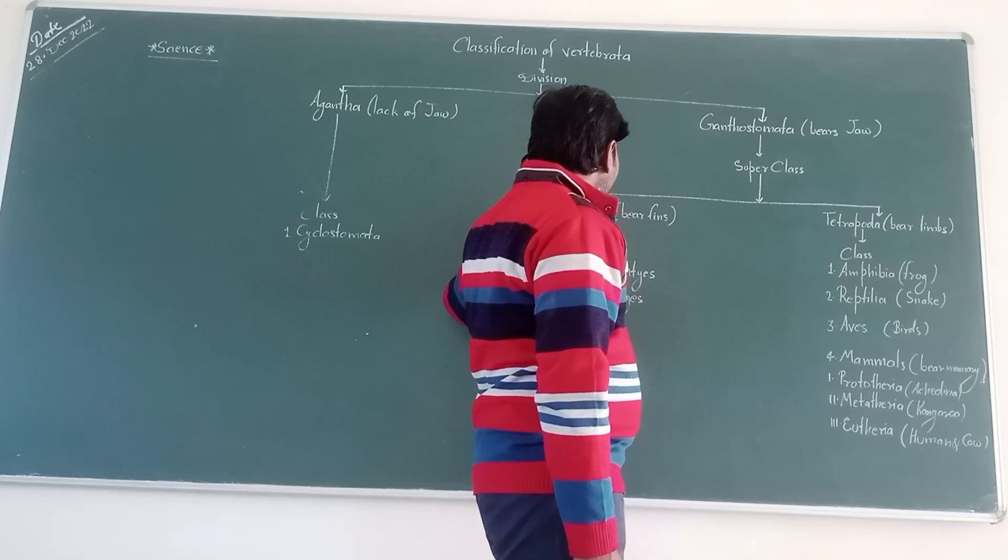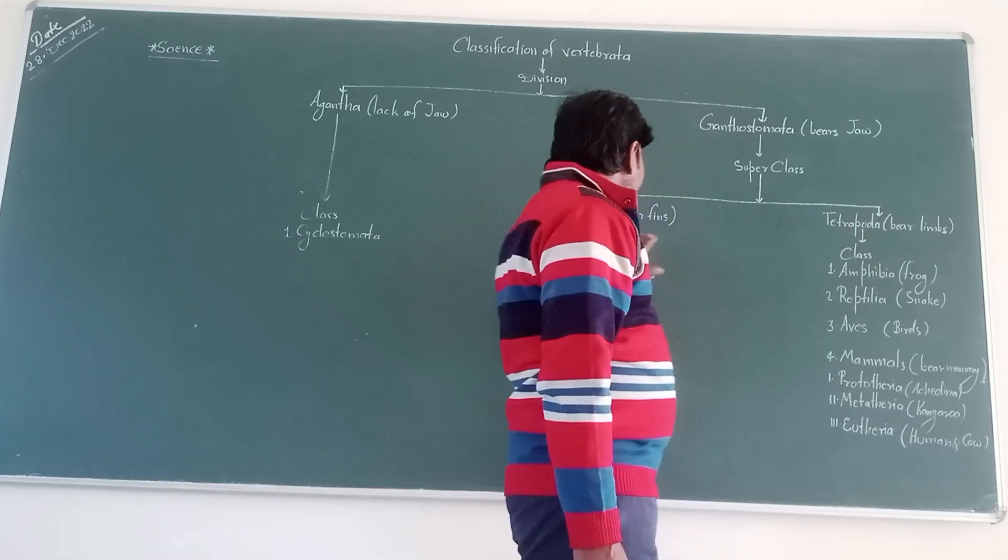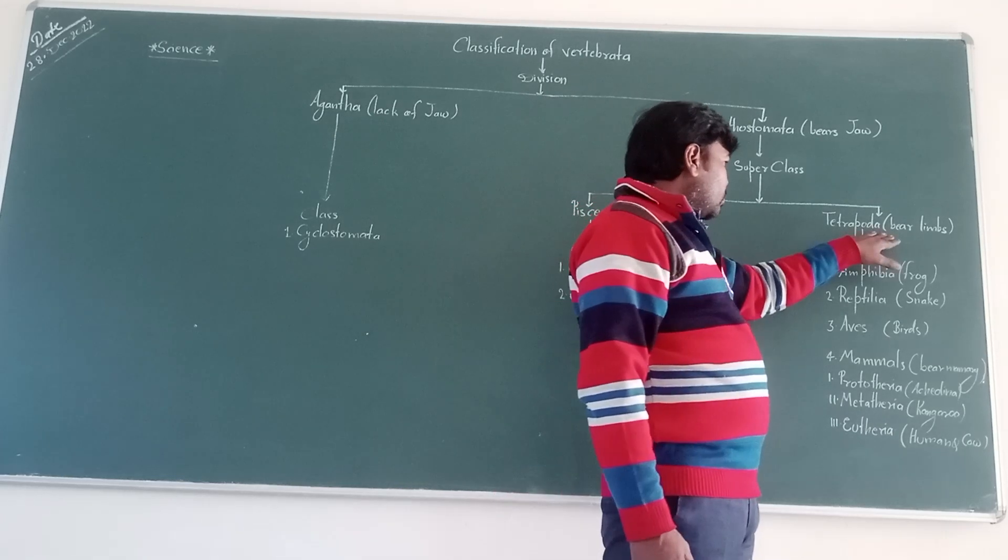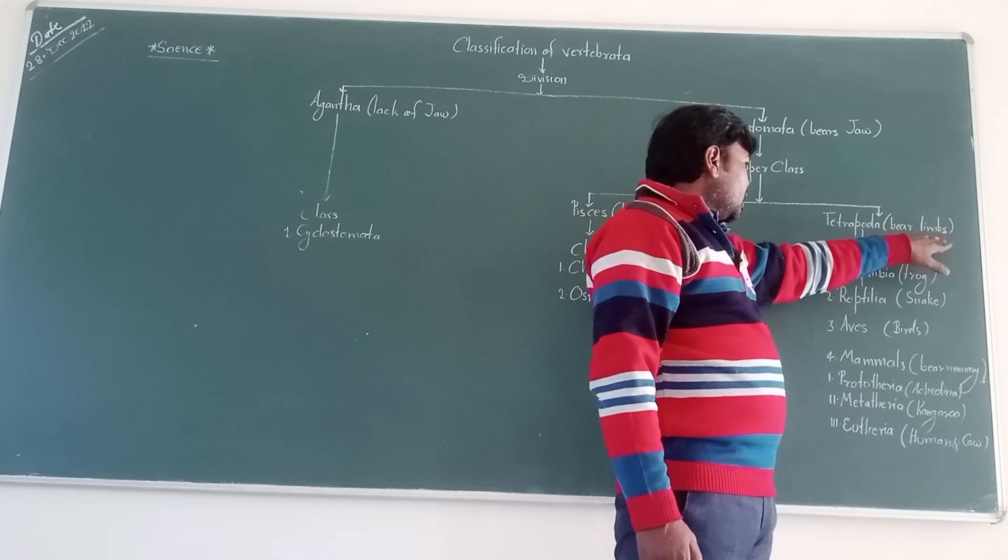First of all, Pisces and Tetrapoda. Next, Pisces are also called fishes and Tetrapoda are also called four-limbed vertebrates.